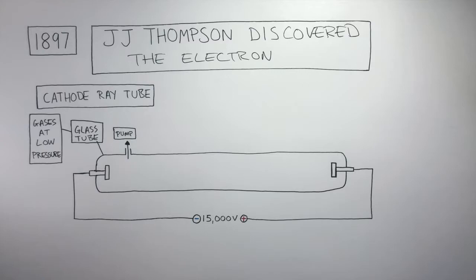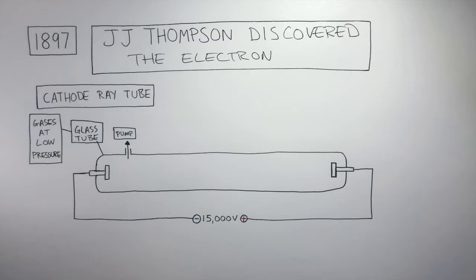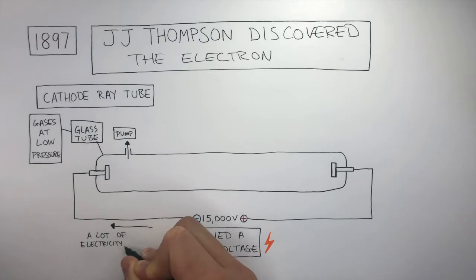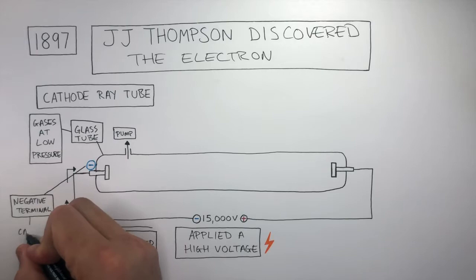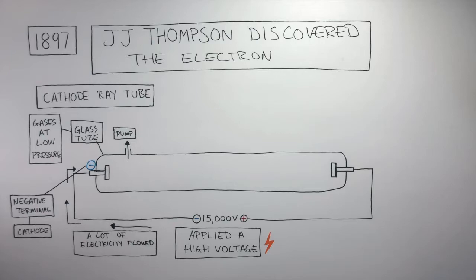He used 15,000 volts of electricity, so he applied a high voltage. This meant a lot of electricity flowed through the wire to the negative terminal, known as the cathode. To the left, where you see the blue negative sign, this is the negative terminal, known as the cathode.